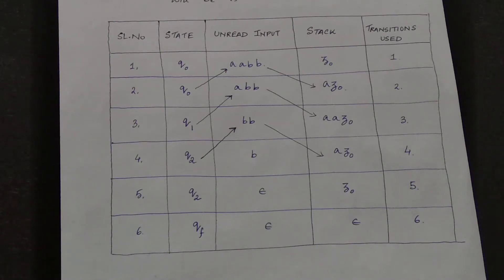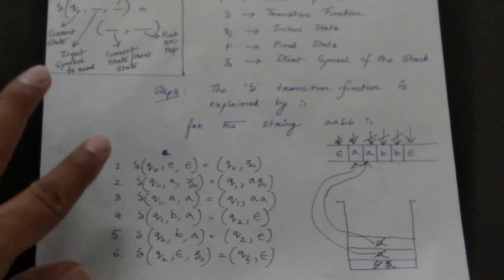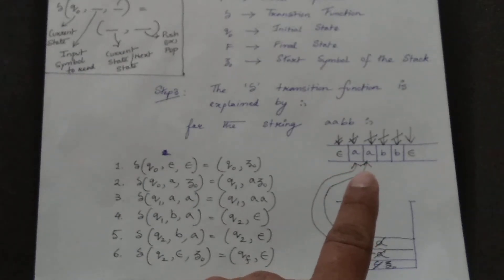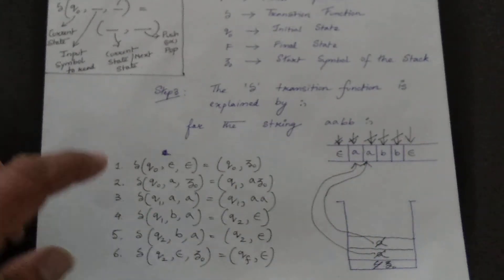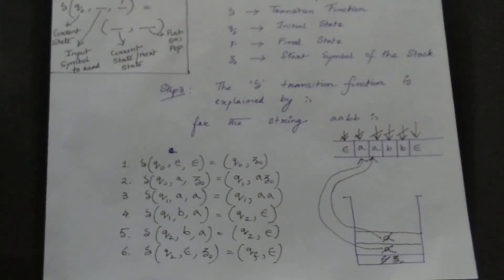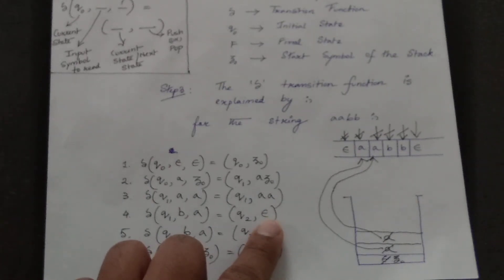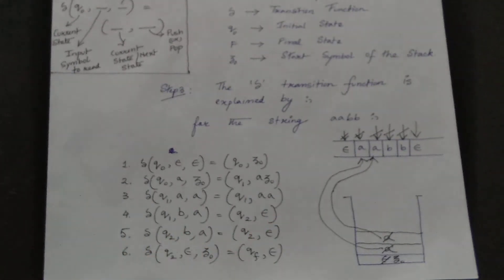The main concept lies in the transition function steps. When input symbols are the same, the state remains the same; when different, the state changes. If epsilon appears in the push/pop position, it means the top of the stack must be popped. This is how you carry forward with the transition function steps.